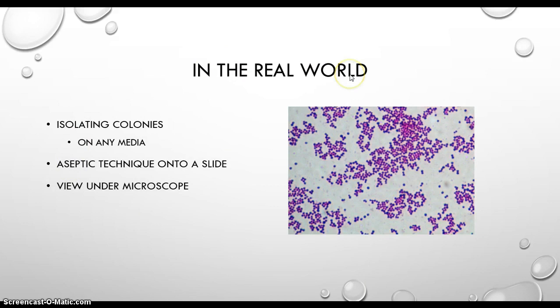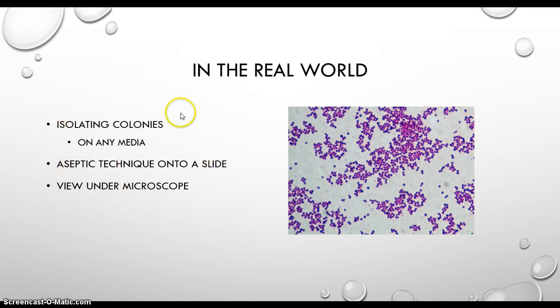So in the real world, what you would do is swab an area and then grow them on some type of medium. Then you would take isolated colonies on that medium and put them on a slide, stain them, and view them under a microscope. This allows you to see the colony morphology after isolating colonies and then see the cellular morphology underneath the microscope.